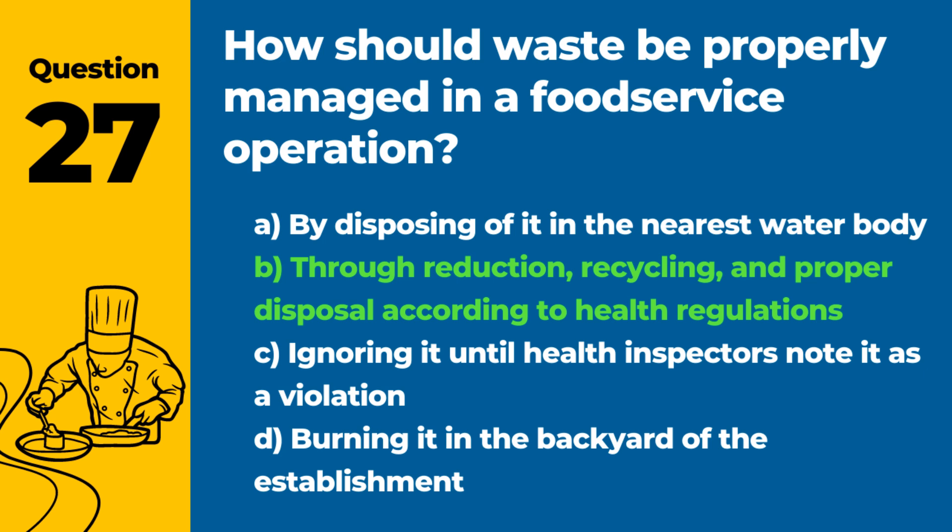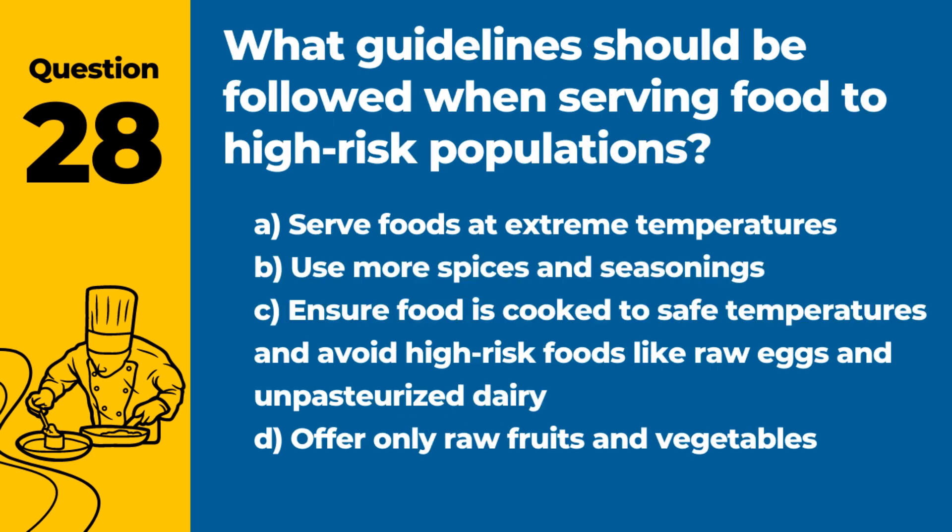Question 28. What guidelines should be followed when serving food to high-risk populations? Answer: C. Ensure food is cooked to safe temperatures and avoid high-risk foods like raw eggs and unpasteurized dairy. Special care is necessary to protect vulnerable groups from foodborne illness.